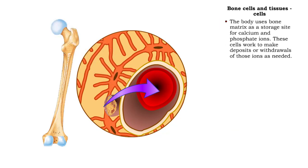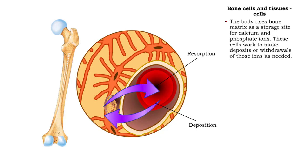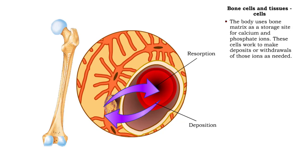Bone matrix serves as a storage site for calcium and phosphate ions. Bone tissue cells work to make deposits or withdrawals of those ions as needed by the body.